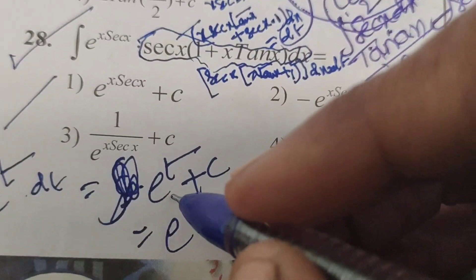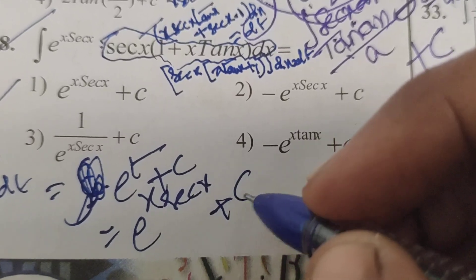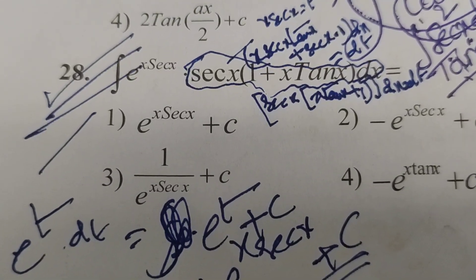What is t here? Our substitution x sec x. E^(x sec x) plus c. This is our solution in this evaluated integral problem. Thank you.